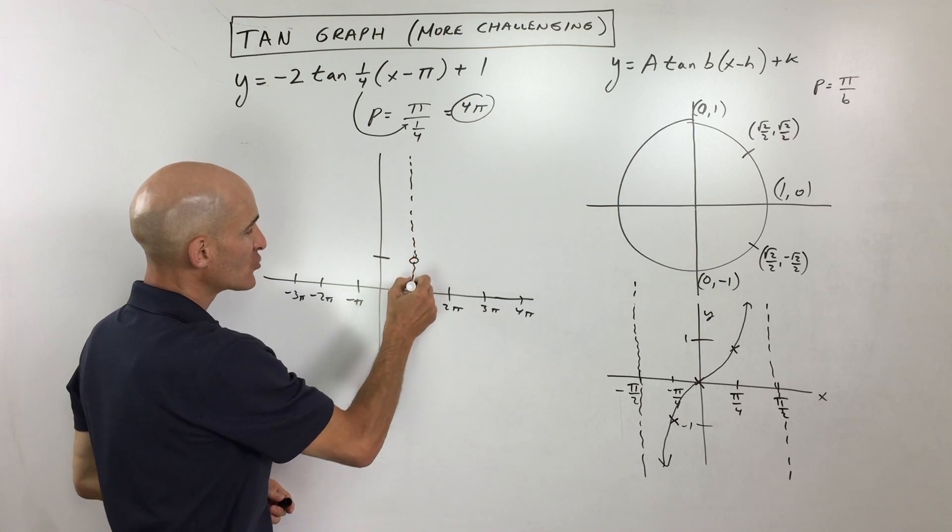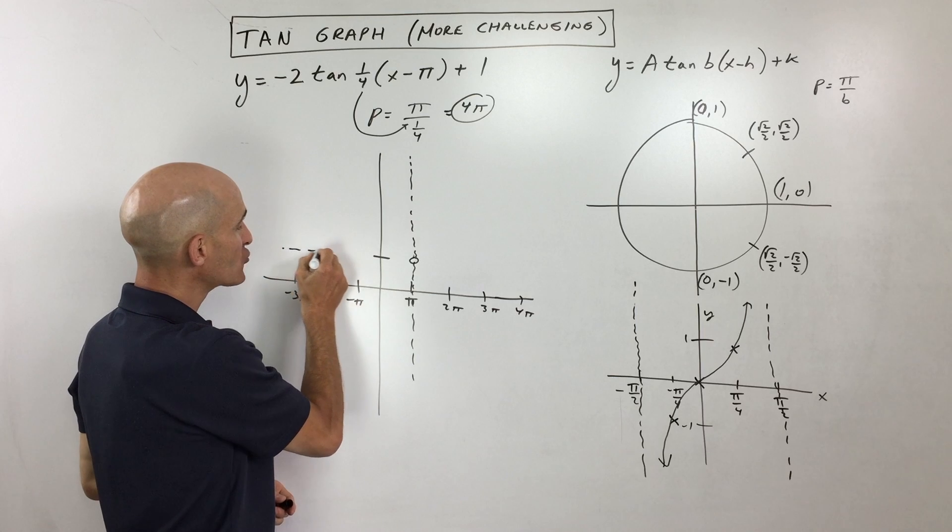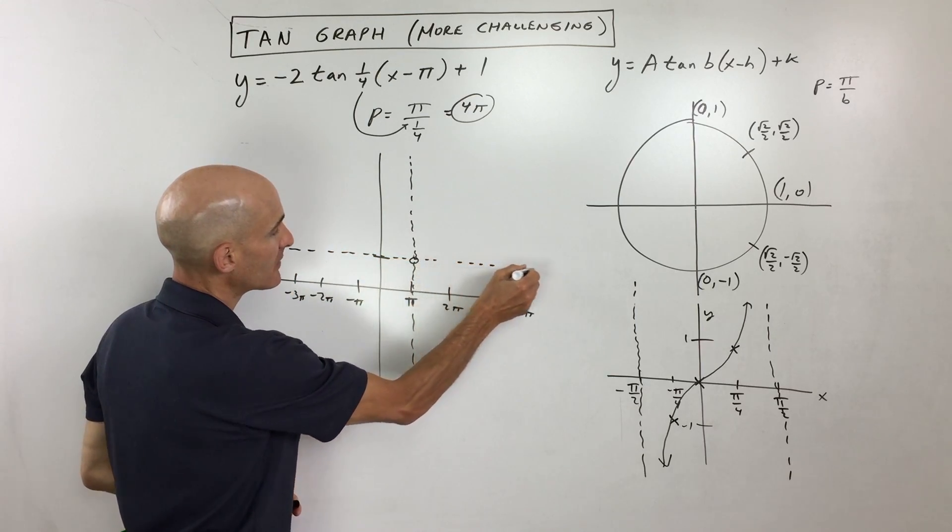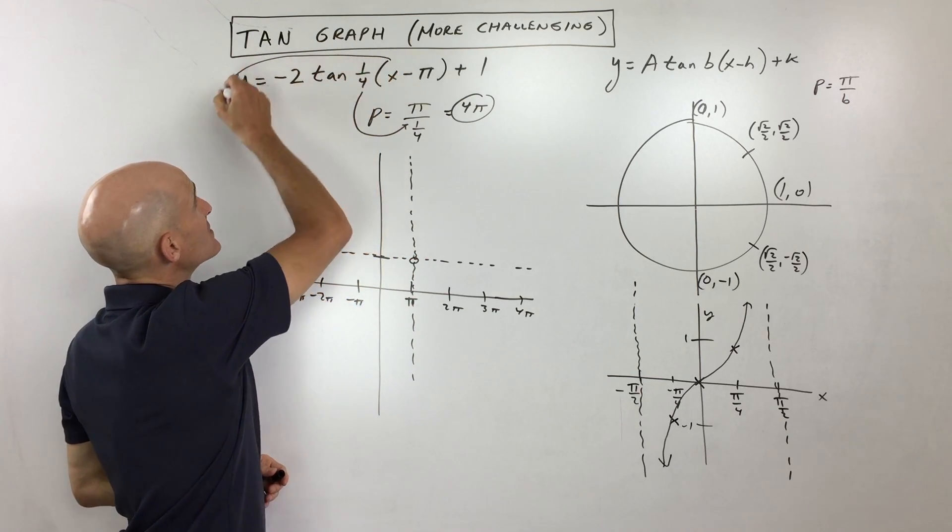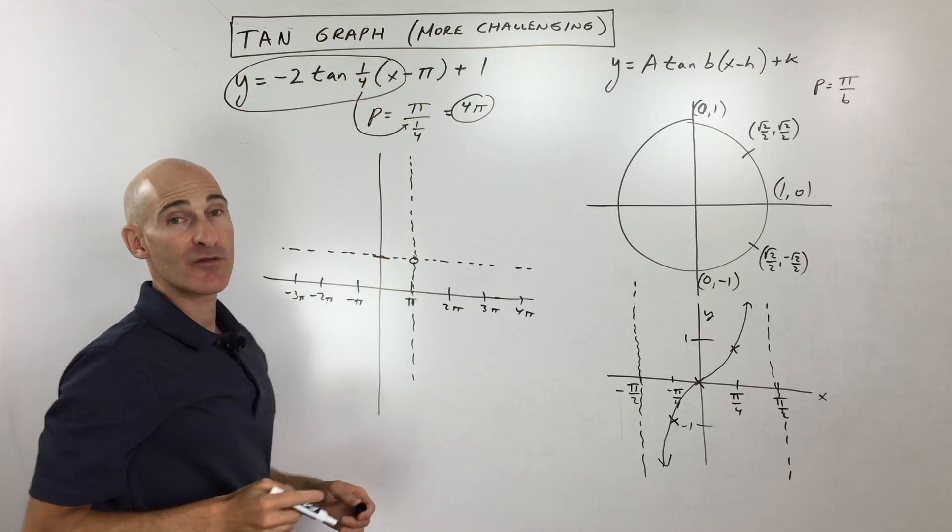So what we're going to do is I'm just going to draw in like a little dash or dotted line. You can draw this really light on your paper, like this. But we're just going to use this as a reference point or as a starting point. Now what we're going to do is we're going to focus in on what's left here, the parent function.